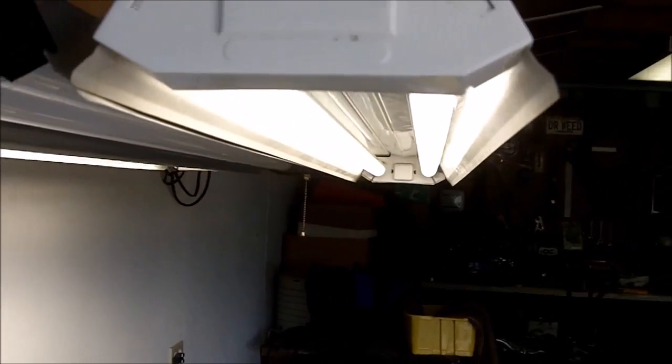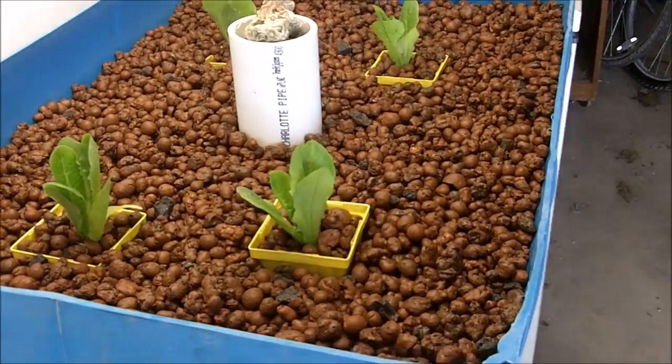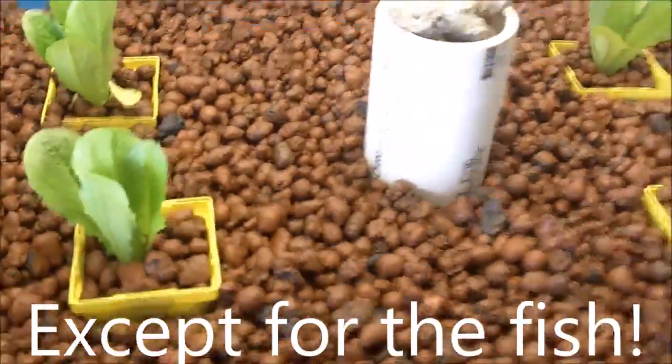As you can see, I installed my lighting system. I'm using three of the four-foot shop lights. I put LED light bulbs in here to cut back on electricity usage and I put it on a timer. So now we're fully operational.